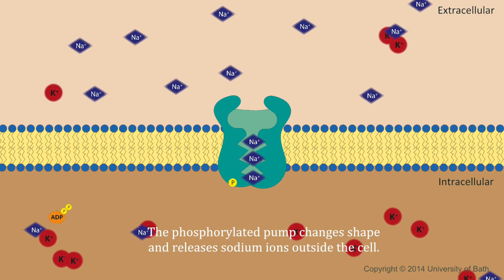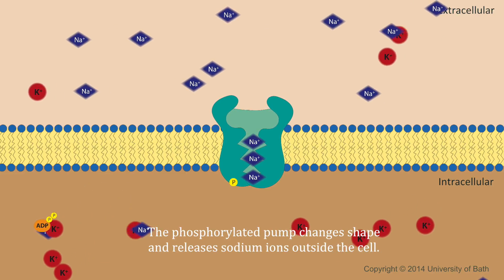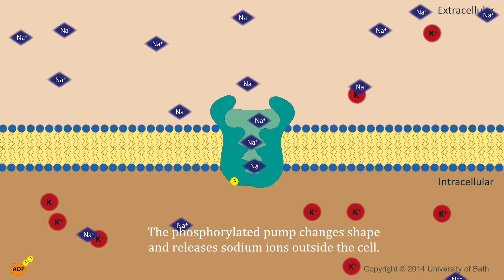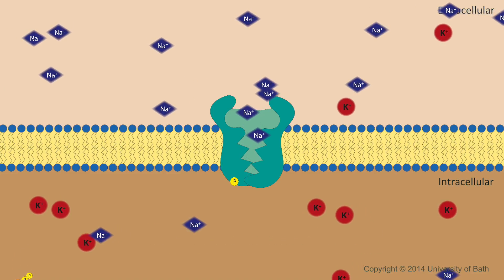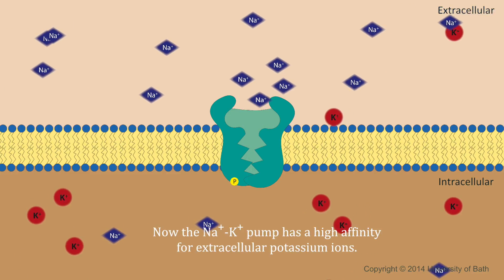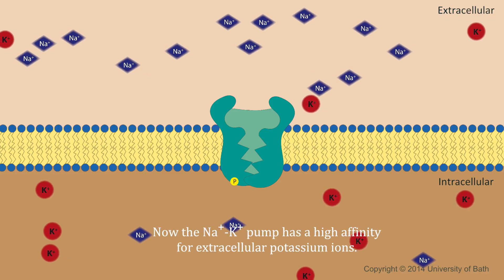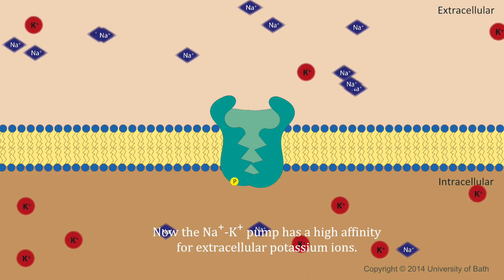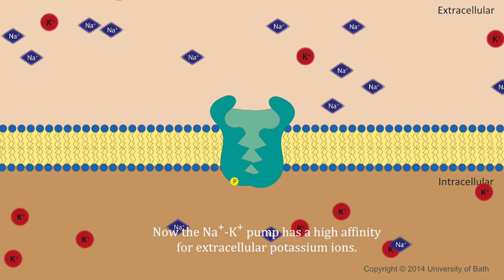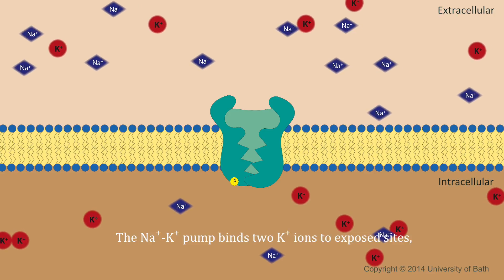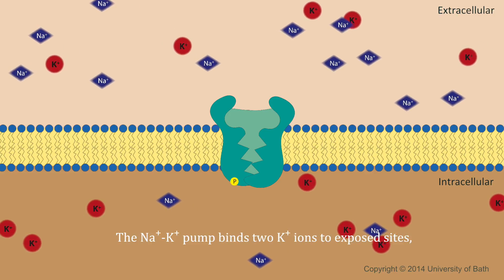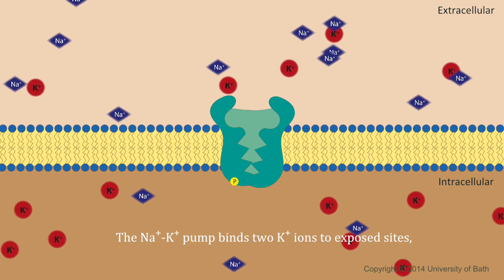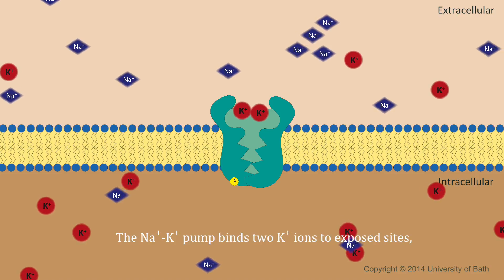The phosphorylated pump changes shape and releases sodium ions outside the cell. Now the sodium-potassium pump has a high affinity for extracellular potassium ions, and binds two potassium ions to the exposed sites.